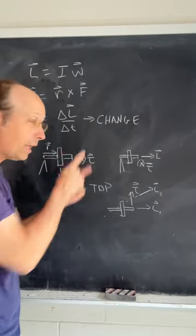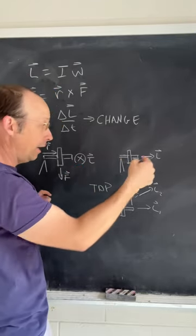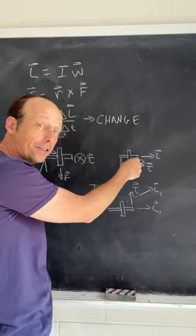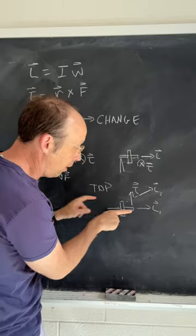Now suppose it's spinning. It already has an angular momentum. It has the same torque—that torque is this way. That's the direction of the change in angular momentum. So if I look at that from the top view, there's